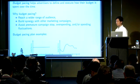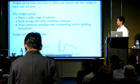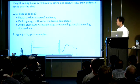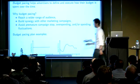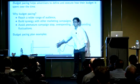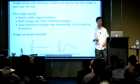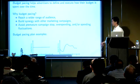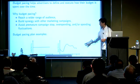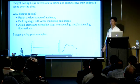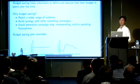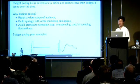These two figures are typical examples of how advertisers would like their budget to be spent. The first is even pacing — the advertiser would like the budget to be spent evenly over time. The second is traffic-based pacing — the advertiser would like to spend more when traffic is high and spend less when traffic is low.